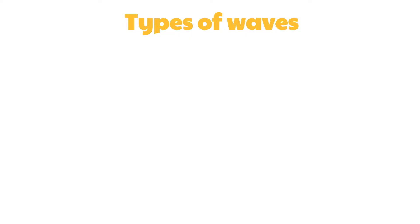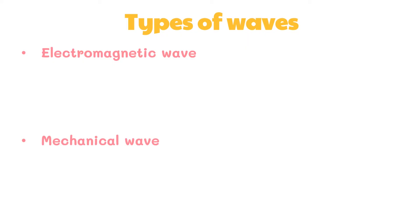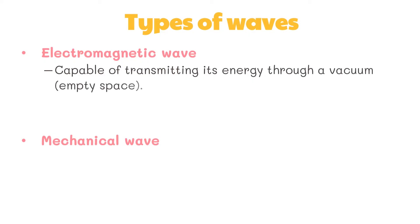Waves come in several shapes and forms. While all waves share some basic characteristics and behaviors, some waves can be differentiated from others based on observable and non-observable characteristics. One way to categorize waves is on the basis of their ability or inability to transmit energy through a vacuum or empty space.